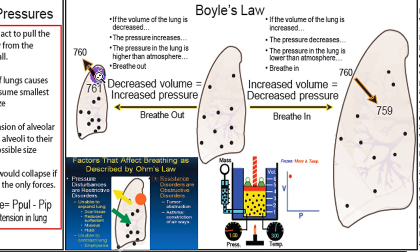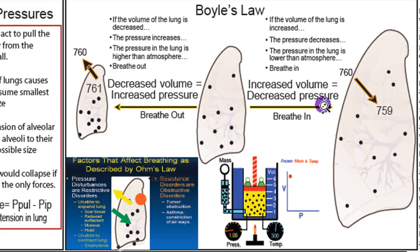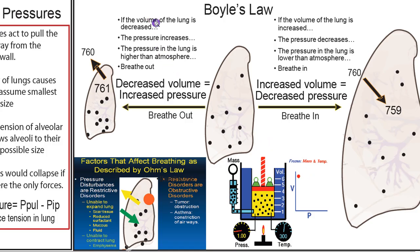If we make this lung smaller, these molecules are more likely to hit the wall of the lung, and that's going to increase pressure. On the other hand, if we increase the volume, it's less likely that these molecules of air will hit the wall of the lung, so this is going to decrease pressure. If the volume of the lung is decreased, the pressure inside the lung will rise to 761 millimeters of mercury — higher than outside — so air will flow out and we breathe out.